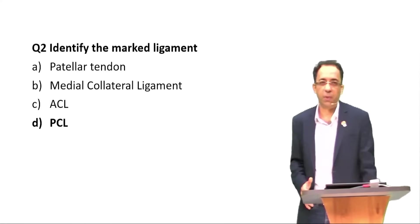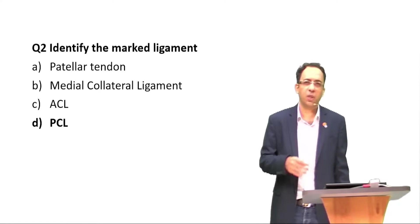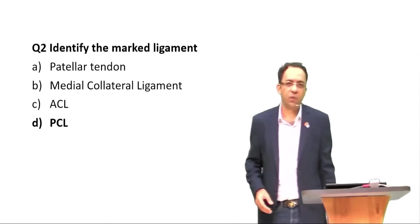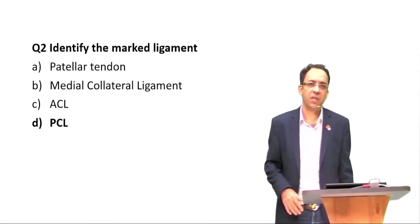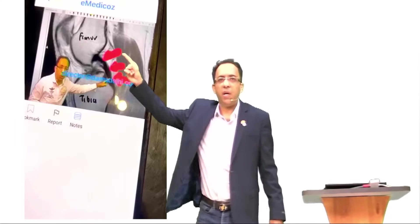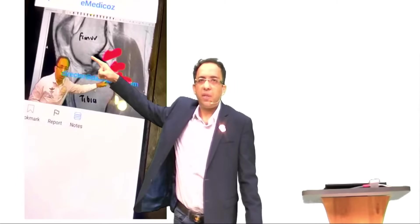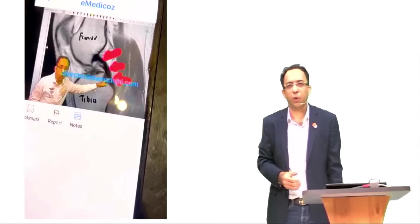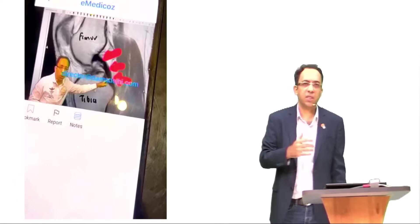There were definitely button battery — it was a predicted question, nothing new in it. Moving on: ACL is a fan-like ligament inserted on the anterior part of the tibia, while PCL is inserted on the posterior part of the tibia. It is called a ligament because it connects bone to bone. It appears dark on the MRI because fibrous structures like tendons and ligaments appear dark on both T1 and T2 weighted images. This is an MRI image.